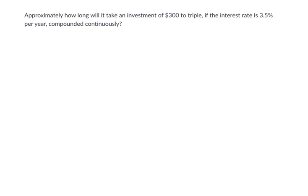So we have a $300 investment, and we want it to triple, so we want it to reach $900. How long will that take? Well, this formula, P times e to the rt, the PERT formula, will tell us the answer.